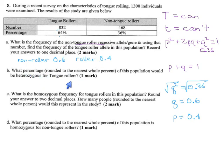What percentage of this population would be heterozygous for the tongue-rolling trait. Heterozygous means one of each. That's the 2PQ group. 2PQ is 2 times 0.4 times 0.6. 0.4 times 0.6 is 0.24. Double that, you get 0.48 or 48%.